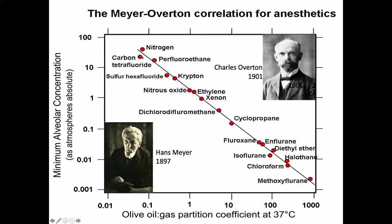Meyer and Overton at the turn of the 20th century looked at a series of gases to determine their anesthetic potency across a wide variety of animals, and found that olive oil was the perfect solvent to correlate with potency. Minimal alveolar concentration — MAC — the lower you go, the more potent the anesthetic. The most potent is methoxyflurane at 0.25%, and nitrogen is an anesthetic at 50 or 60 atmospheres.